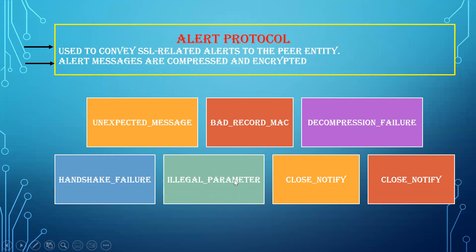Illegal parameter. Illegal parameter is a field in the handshake that specifies there are out-of-range or inconsistent values in the field. When that occurs, it is flagged as an illegal parameter.